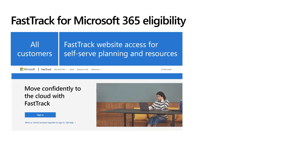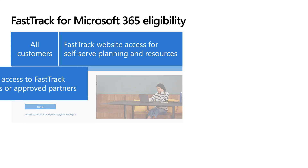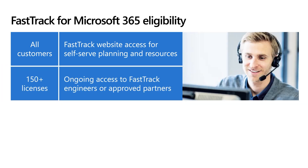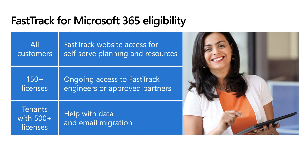Let's cover what you get with the FastTrack benefit. All customers have access to our self-service guidance, tools, and best practices available on the FastTrack website. For customers that have 150 or more licenses, FastTrack has partners and remote engineers who assist with onboarding, configuration, and deployment. This service is remote assistance — FastTrack provides the guidance and the customer is accountable for executing the deployment. For tenants with 500 or more licenses, FastTrack performs email and data migrations from Google Suite, Box, Dropbox, and on-premises platforms including Exchange and FileShares.